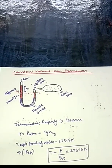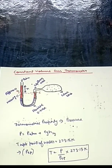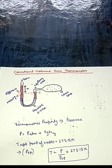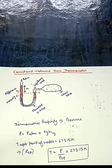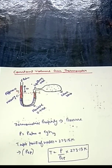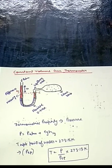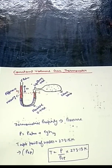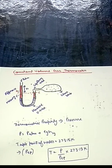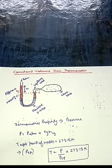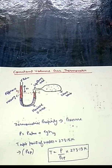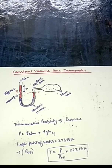So that is how you find the temperature using a constant volume gas thermometer. I hope this video was clear. From the next topic onwards we will move on to the next chapter on work and heat transfer, so stay tuned. Thank you.